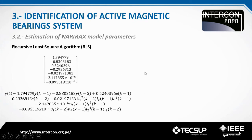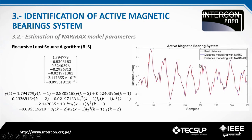With the estimation of the coefficients and the determination of the structure, we have the complete NARMAX model, shown as difference or recurrence equations. A comparison was made between the rotor position distance for the real system and both the initial NARX model and the final NARMAX model. This is shown in the image, where we can see that both models fit very well to the real distance data used for identification.